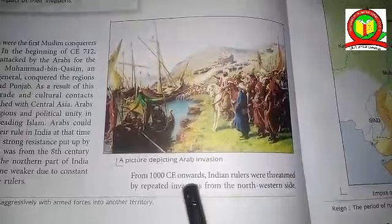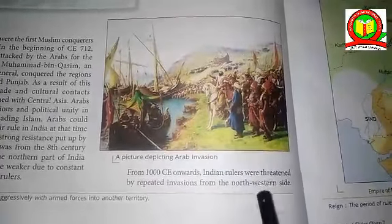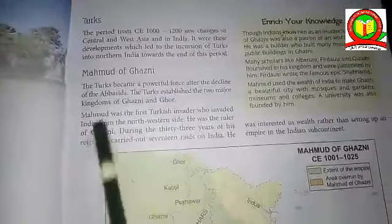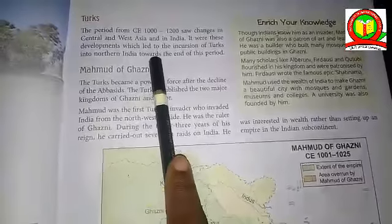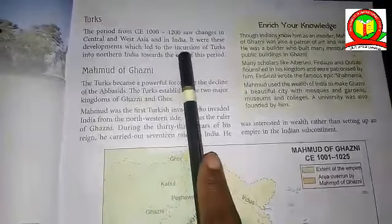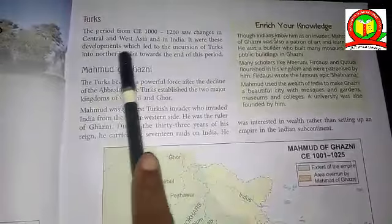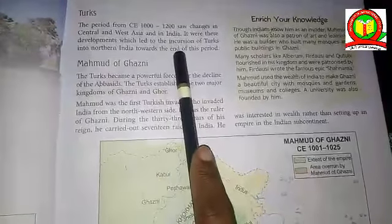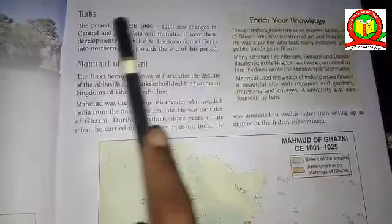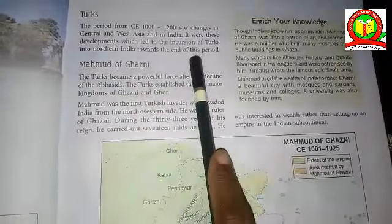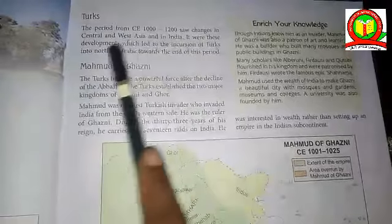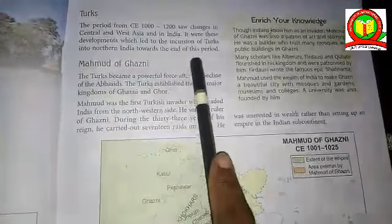From 1000 CE onward, Indian rulers were threatened by repeated invasions from the northern and north-western side. The period from CE 1000 to 1200 saw major changes in Central and West Asia and in India. It were these developments which led to the incursion of Turks into northern India toward the end of this period.